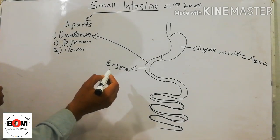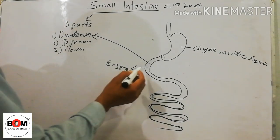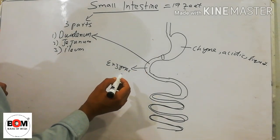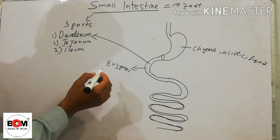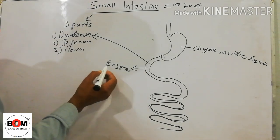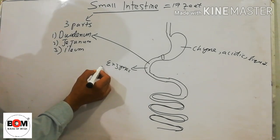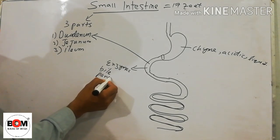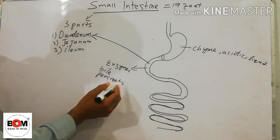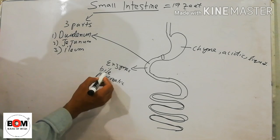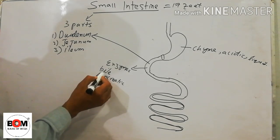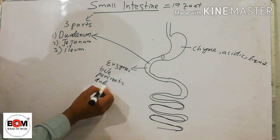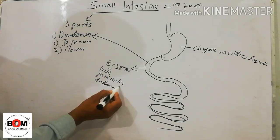What are the enzymes in the duodenum? The duodenum receives bile, pancreatic enzymes, and also duodenal enzymes.